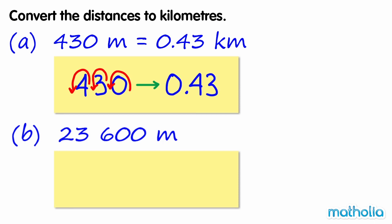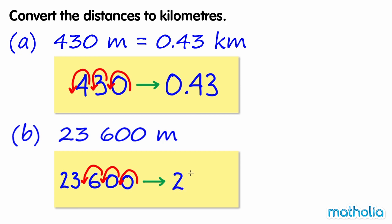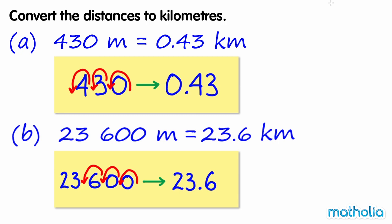23,600 metres. Shifting three places to the left gives 23.6. So 23,600 metres equals 23.6 kilometres.